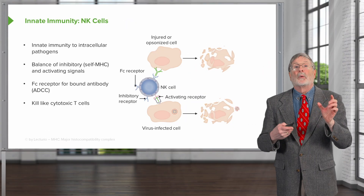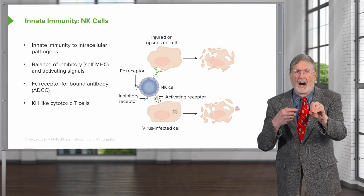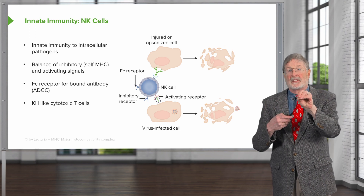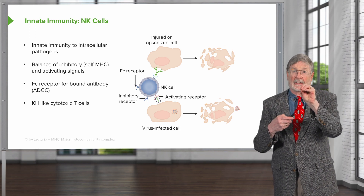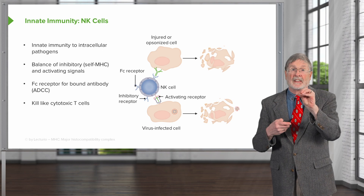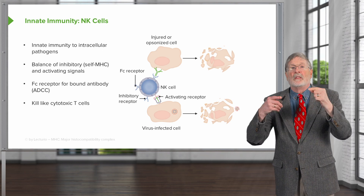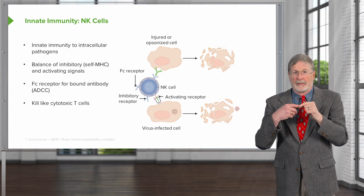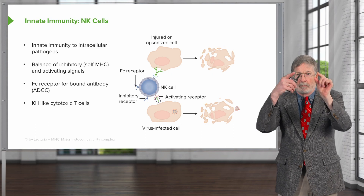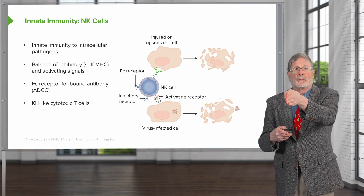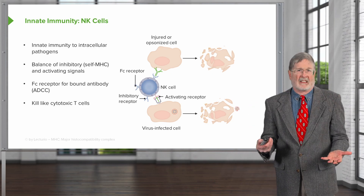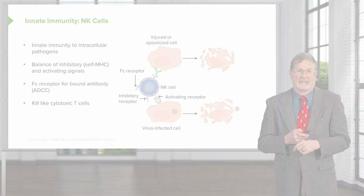When they form their synapse — when they bind, either through FC receptor and antibody recognition, or through the loss of inhibitory receptors — they will release perforin in a directional fashion, punch a hole, and then granzyme will cross and cause the death of the target cell.